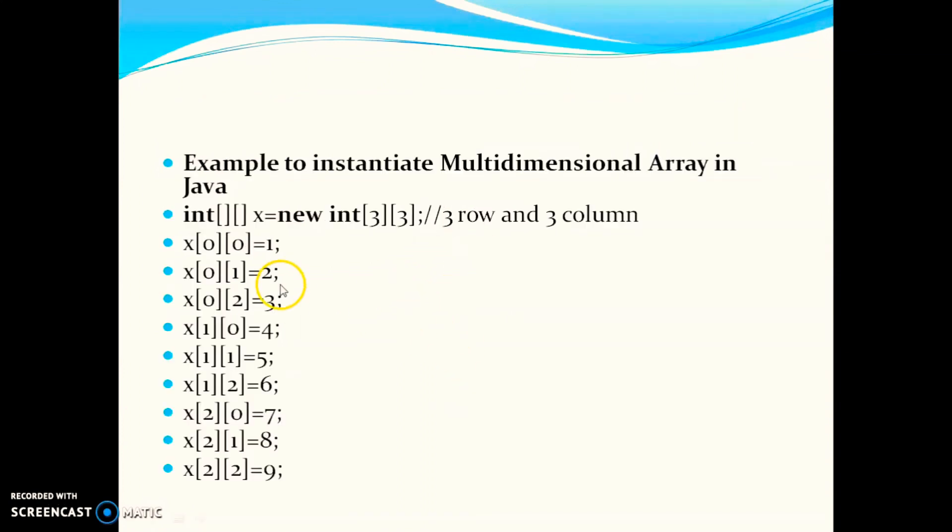Here's an example to instantiate multidimensional array in Java: integer then double square bracket then array name equals new, then the data type you have initially used. Here you can specify the size. The first 3 indicates the rows in your matrix and the second 3 indicates columns in the matrix. As we have specified 3 and 3 here, it will be a 3 by 3 square matrix.